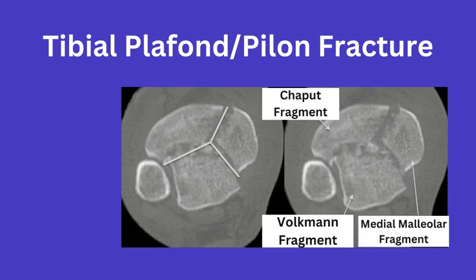There are typically three major tibial pieces formed, as seen in this image, when ankle ligaments remain intact. Note that there are pylon fractures with severe comminution, so this fracture pattern is not seen in all pylon fractures. Nevertheless, if you do see this fracture pattern, you will want to be at least familiar with the fragments.